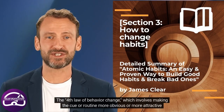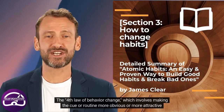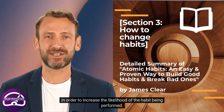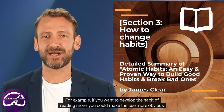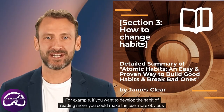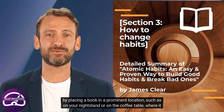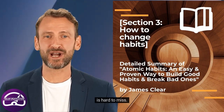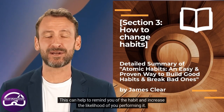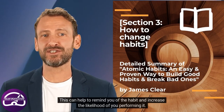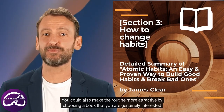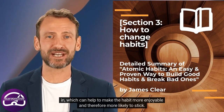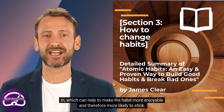The fourth law of behavior change involves making the cue or routine more obvious or more attractive in order to increase the likelihood of the habit being performed. For example, if you want to develop the habit of reading more, you could make the cue more obvious by placing a book in a prominent location, such as on your nightstand or on the coffee table. You could also make the routine more attractive by choosing a book that you are genuinely interested in, which can help make the habit more enjoyable.